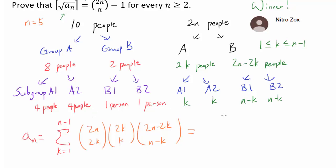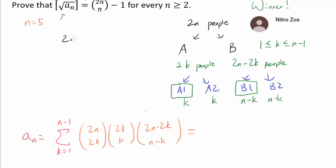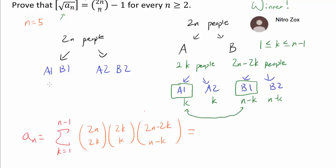One of the most elegant ways of simplifying a_n is due to my younger brother, who I give a huge shoutout to. Instead of splitting 2n people into group A and group B, let's select out of 2n people everyone who is going to be in A1 or B1. We first select A1 and B1 together — n people — and separately A2 and B2 — also n people. This takes advantage of the symmetry, because k plus (n minus k) is simply n.